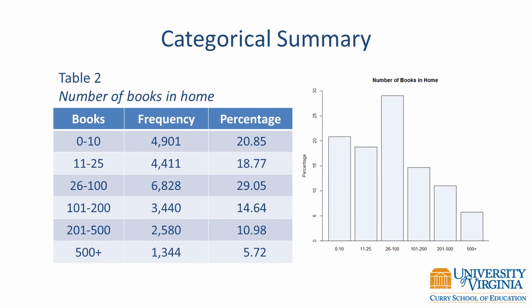The summary for number of books in home appears similar, with a tabular and graphical summary. However, the values are ordered, so we cannot swap rows in the table or change the position of the bars without altering the meaning. We must present them in order: 0 to 10, 11 to 25, and so on — or in reverse order. No other ordering would be acceptable because the values are inherently ordered.